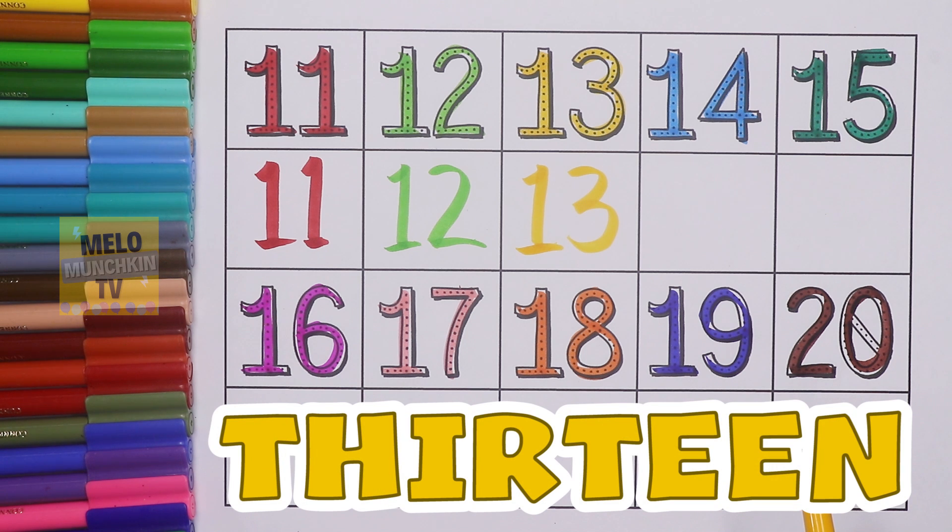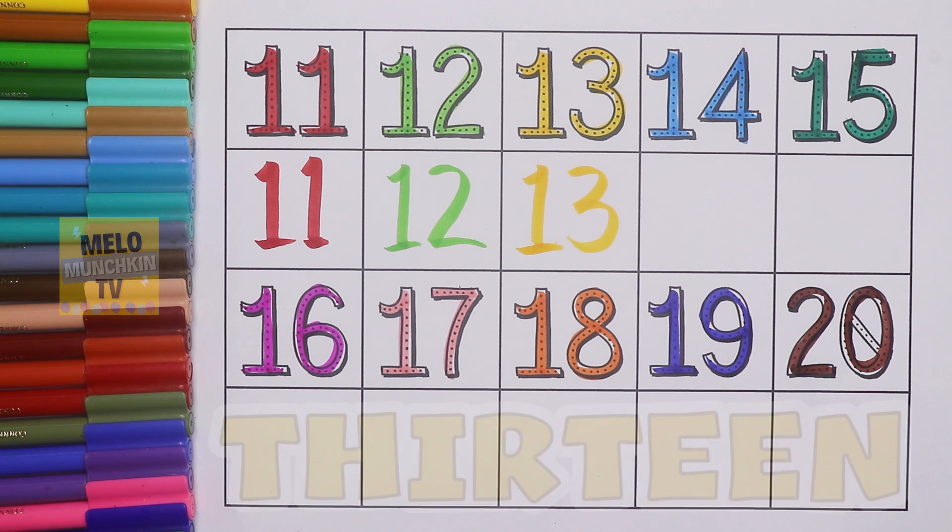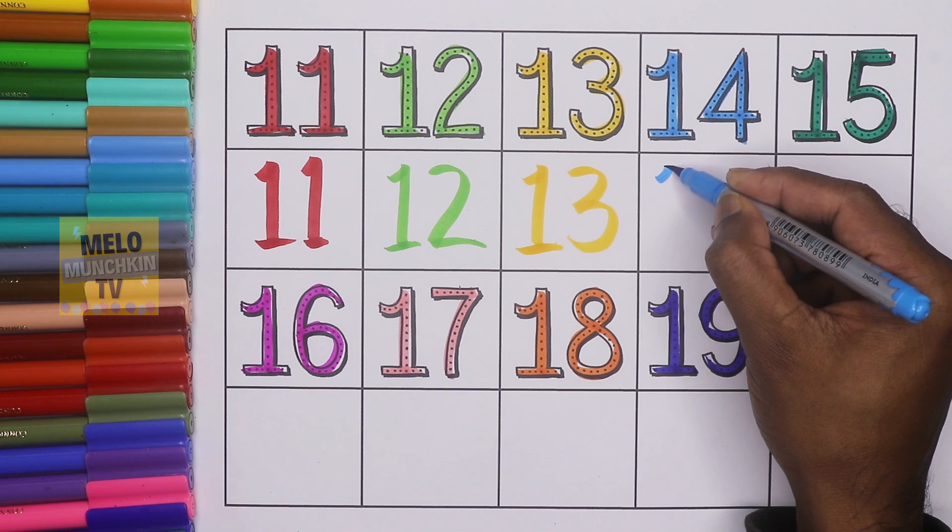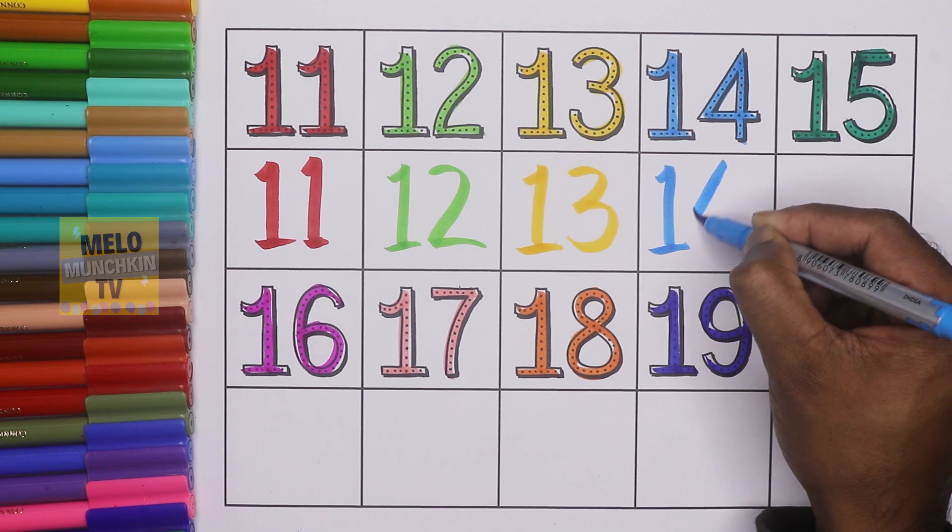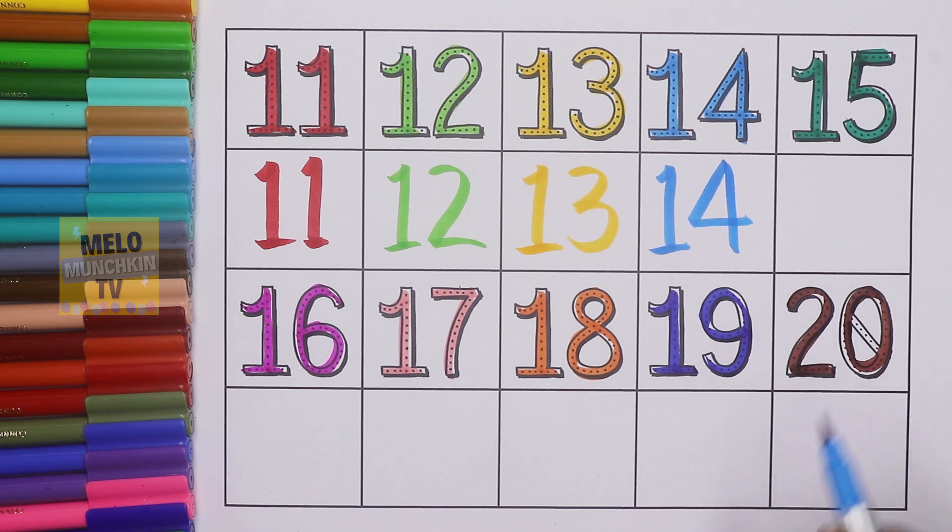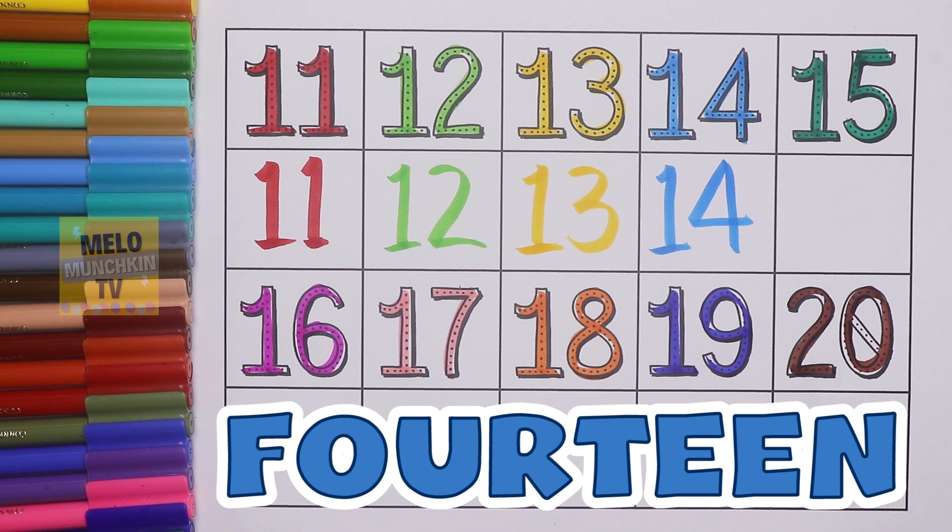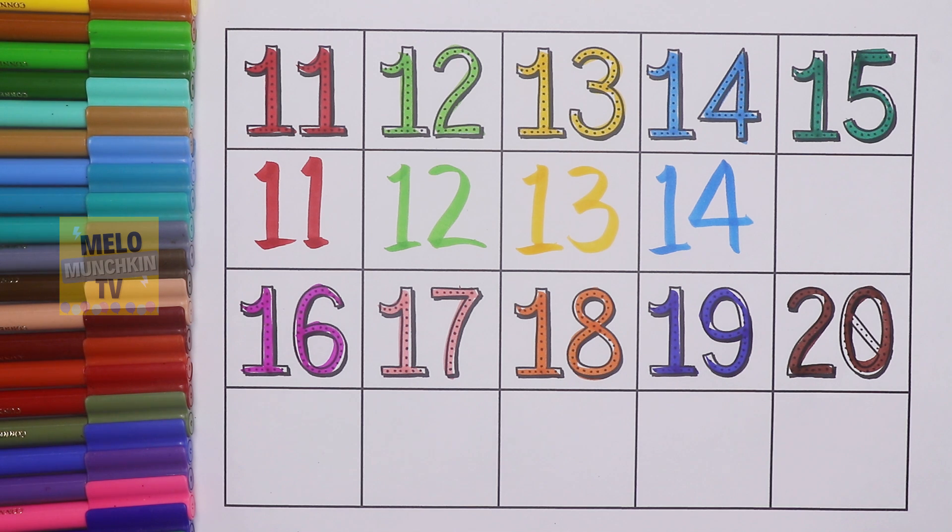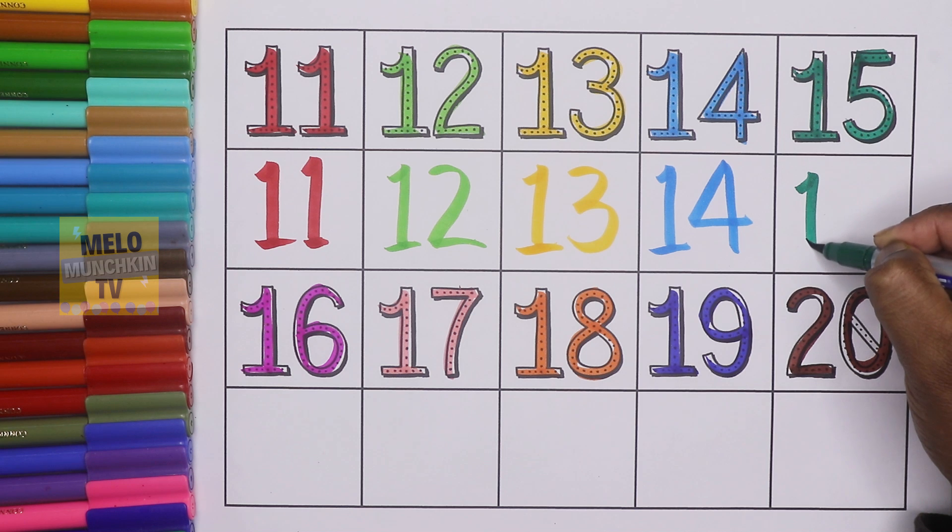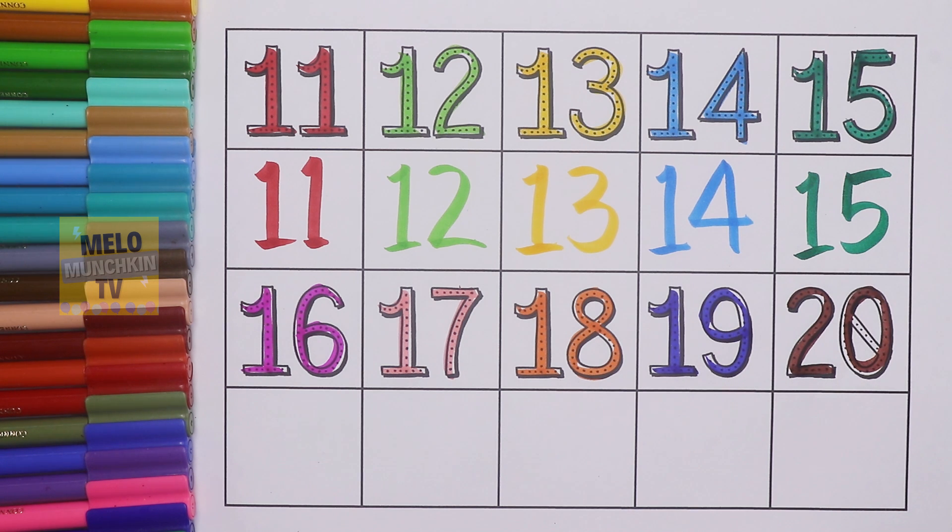This is 14, 1-4, 14, and the spelling is F-O-U-R-T-E-E-N, 14. Next, 15, 1 and 5, 15, and the spelling is F-I-F-T-E-E-N, 15.